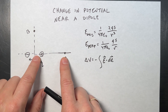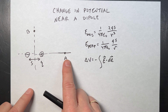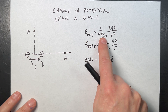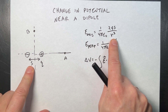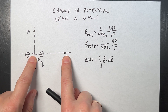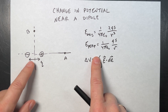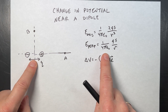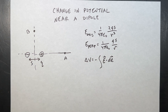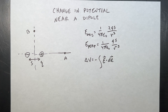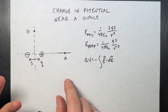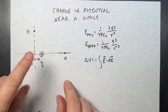Along the axis, if you're far from the dipole, the electric field is 1 over 4π ε₀ times 2qs over r³. I can calculate the magnitudes at those special locations, but if I want to calculate it at other places, that expression doesn't work.